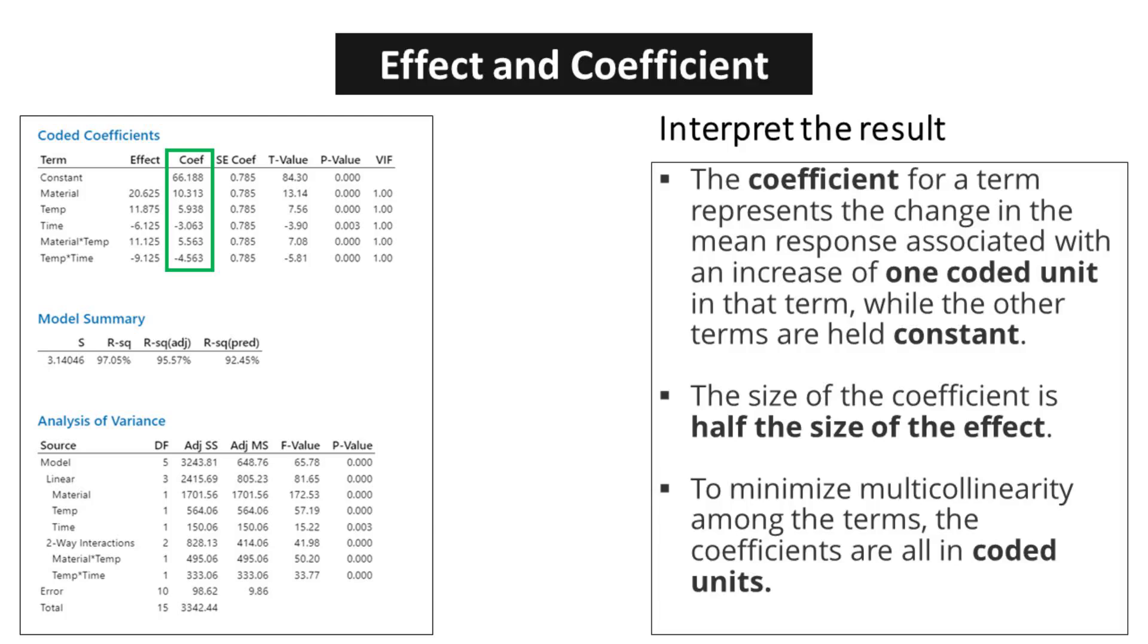The coefficient for a term represents the change in the mean response associated with an increase of one coded unit in that term, while the other terms are held constant. Furthermore, it is important to note that the size of the coefficient is half the size of the effect. In addition, to minimize multicollinearity among the terms, the coefficients are all presented in coded units.